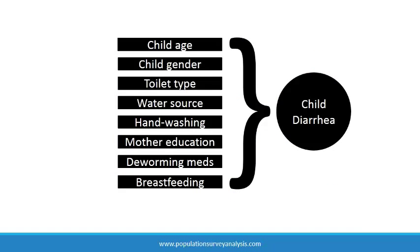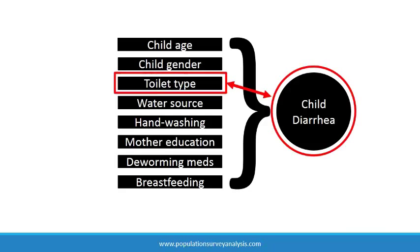For example, we can identify the magnitude and direction of association between household toilet type and child diarrhea, accounting for the related influence of drinking water source and other household socioeconomic factors. Likewise, we can identify the additional unique contribution of water source toward explaining childhood diarrhea beyond other socioeconomic factors.